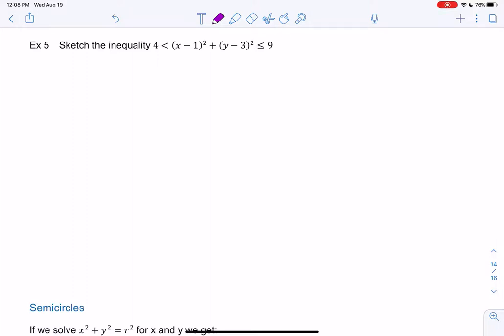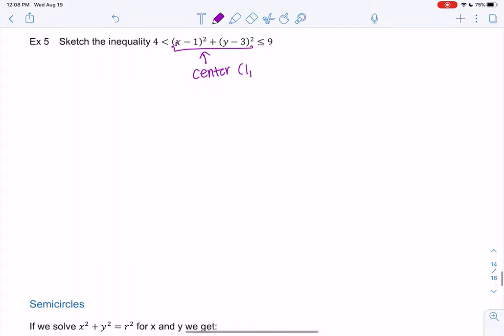So these are actually two circles, right? This is a circle with a center of (1, 3). The center is found by what you plug in to get zero. 1 minus 1 would be zero, 3 minus 3 would be zero, so the center is (1, 3).